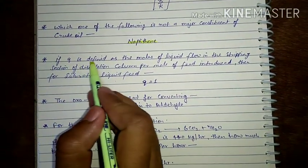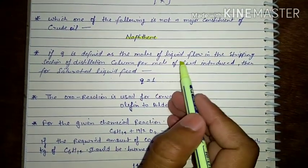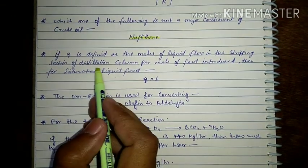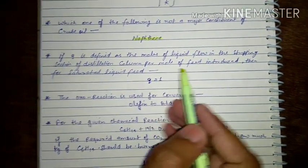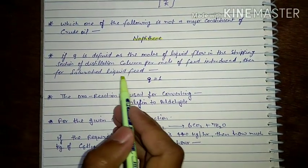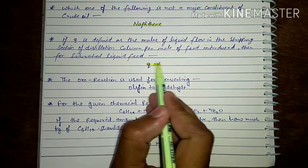Next question: If Q is defined as the moles of liquid flow in the stripping section of distillation column per mole of feed introduced, then for saturated liquid feed, Q is equal to 1.